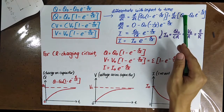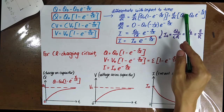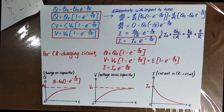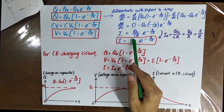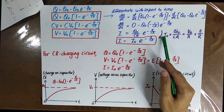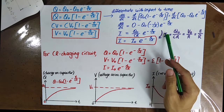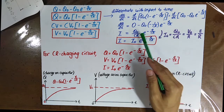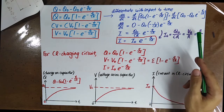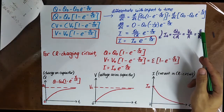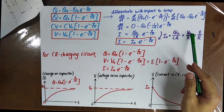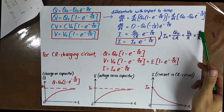Q0 is the maximum charge of the capacitor, so it is a constant. When you differentiate a constant, you get zero. You finally get I equals I0 times e to the power of negative T over CR, where I0 is the maximum current in the circuit. The maximum current equals Q0 over CR, and Q0 over C equals V0, which equals E. So I0 equals V0 over R, which equals E over R. It is important to remember this formula for maximum current.